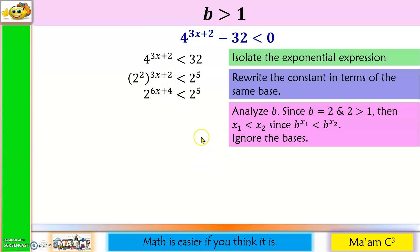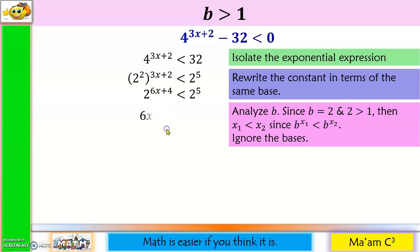Step 3: analyze b. Our base is 2, and 2 is greater than 1. Then x sub 1 is less than x sub 2 because b raised to x sub 1 is less than b raised to x sub 2. This means our inequality symbol will not change. So we ignore the bases and focus on the exponents, copying them without changing the inequality symbol — because our base is greater than 1.